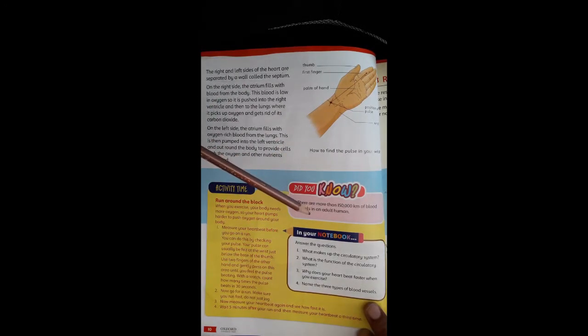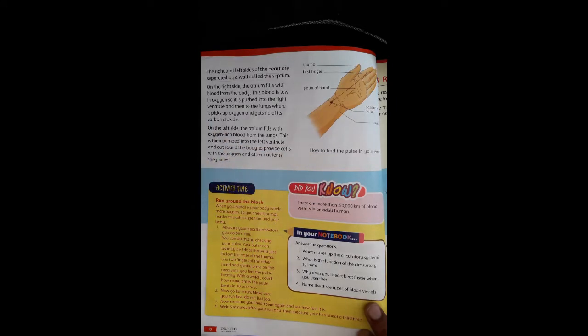There are more than 50,000 km of blood vessels in an adult human. There are so many blood vessels.